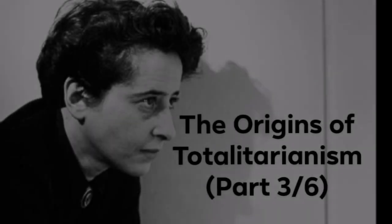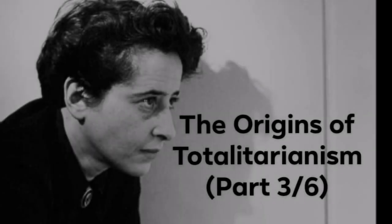Hey everyone, back again. Let's continue on with Hannah Arendt's 'The Origins of Totalitarianism.' Here we're going to be starting with Part Two, titled 'Imperialism,' and Chapter Five, titled 'The Political Emancipation of the Bourgeoisie.'